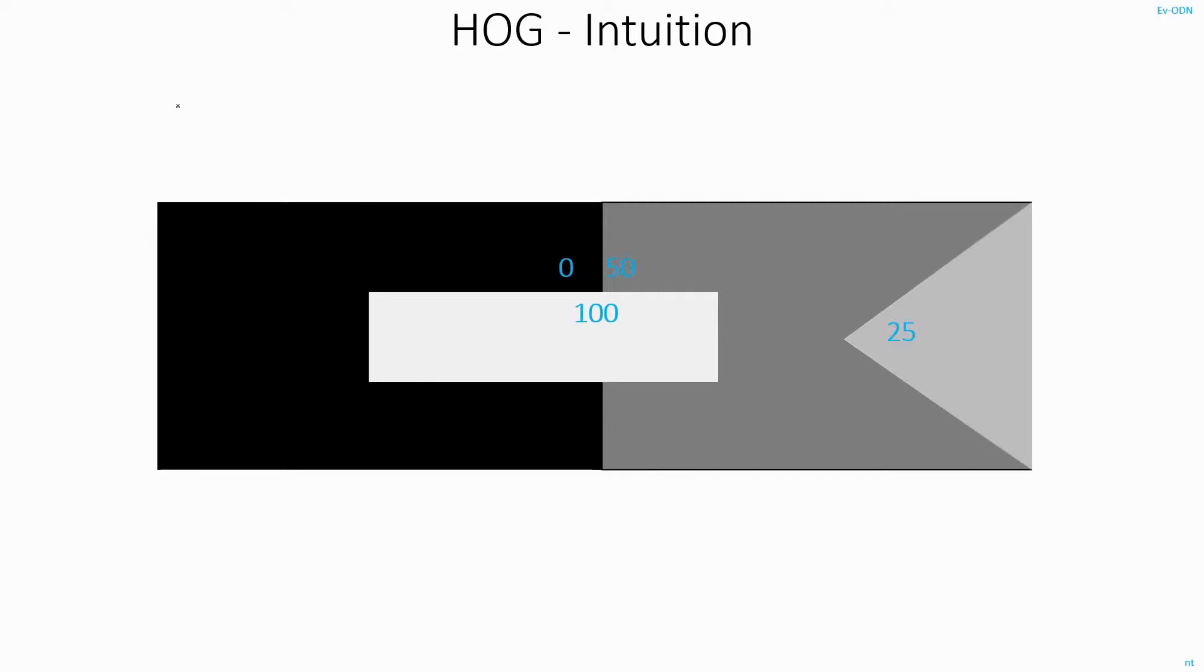What HOG tries to extract is the contrast in different regions of the image. If you take this image as an example, the black patch will have a pixel intensity value of 0, the gray one will have an intensity value of 50, the white one has 100, and this triangular region has a pixel intensity of 25.